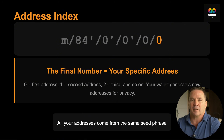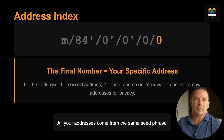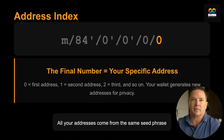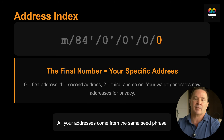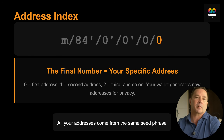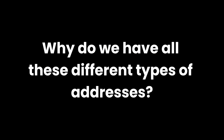Just an aside: if you want to get technical, each position in the derivation path is called an index — the purpose index like 84 or 86, the coin type index, the account index, the change index, and the address index. But you don't need to use that terminology unless you're at a Bitcoin conference trying to show off. So why do we have all these different types of wallets? Because Bitcoin has evolved since 2009.